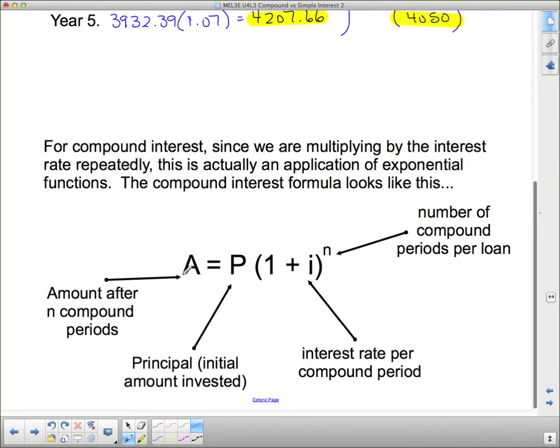So here's our compound interest formula. The amount we have after n compound periods, and here's our n compound periods, is equal to the principal amount, the initial amount invested, times one plus the interest rate per compound period as a decimal. That's important.